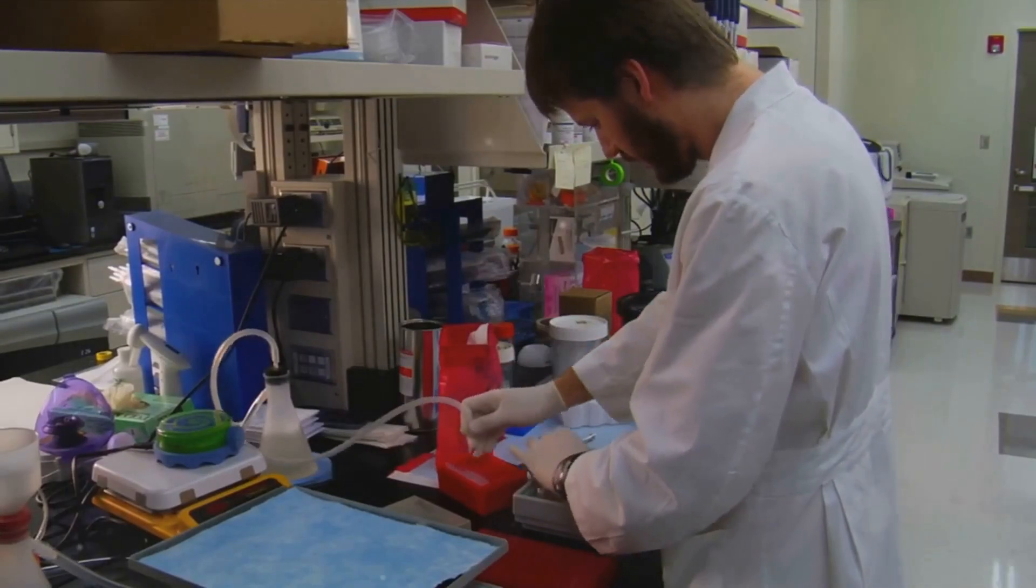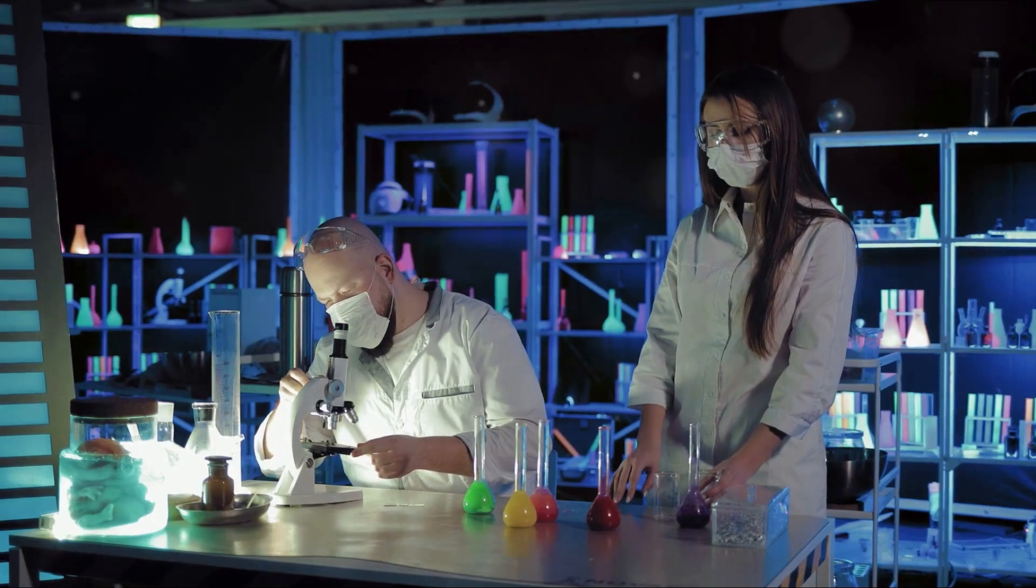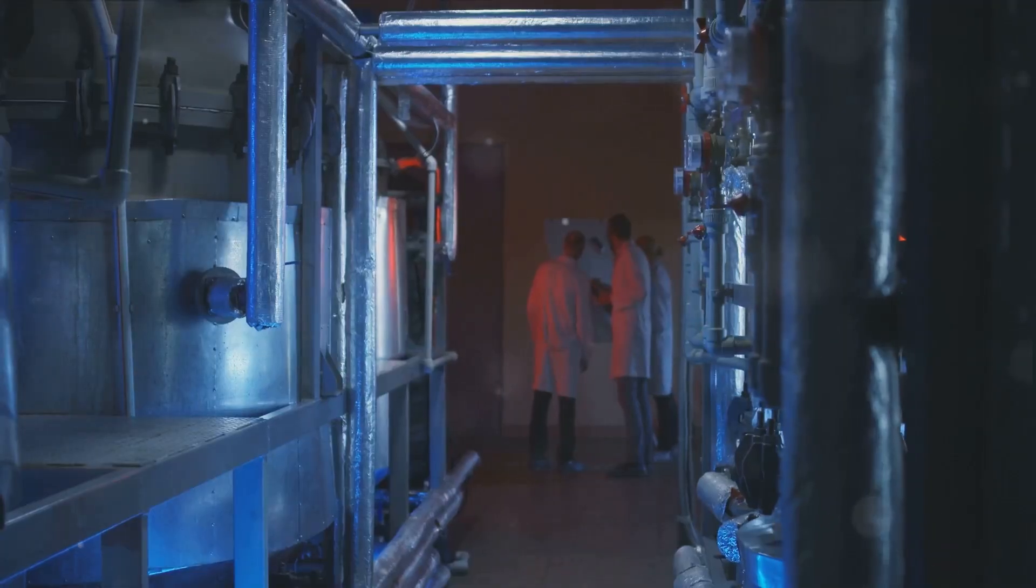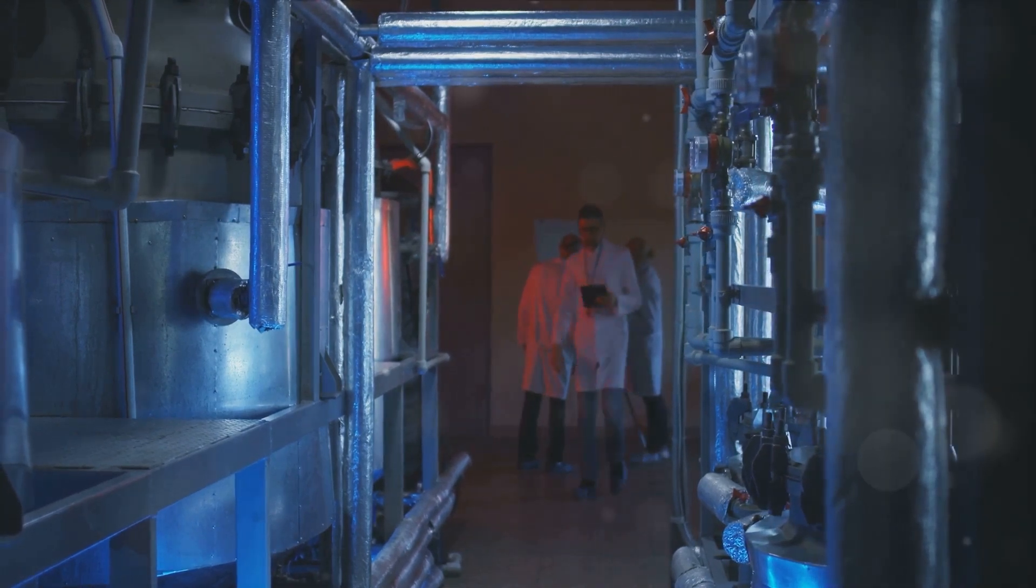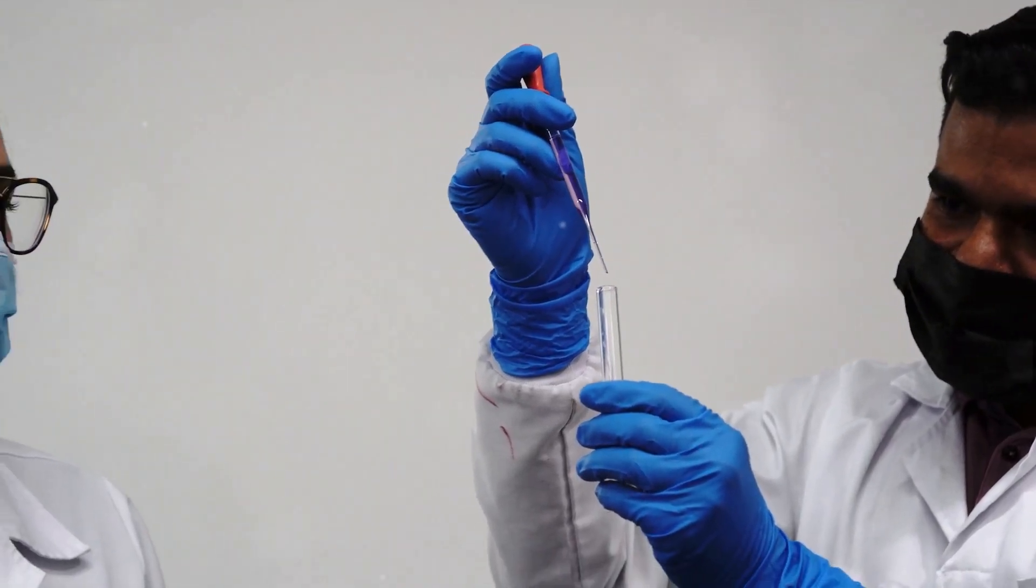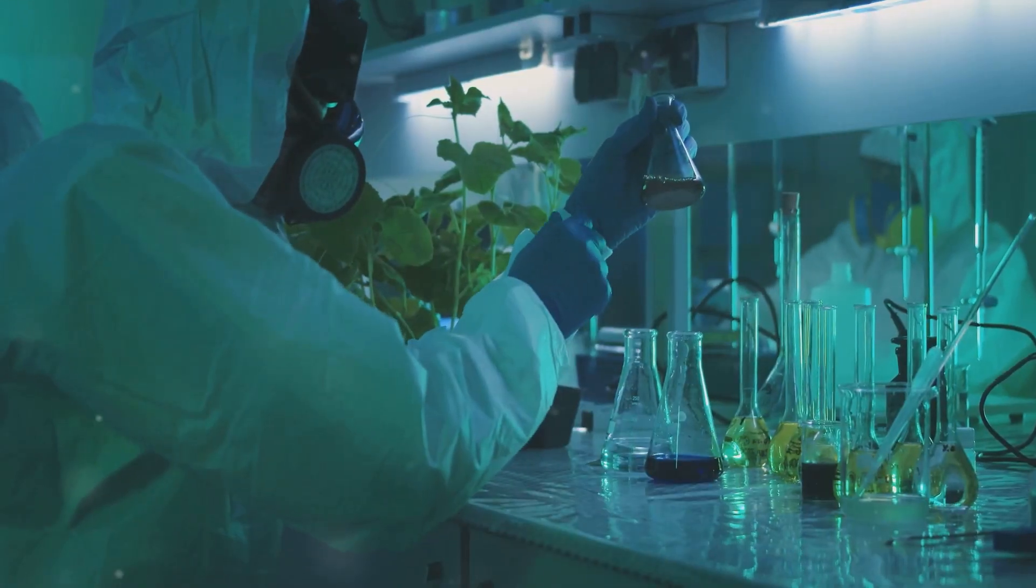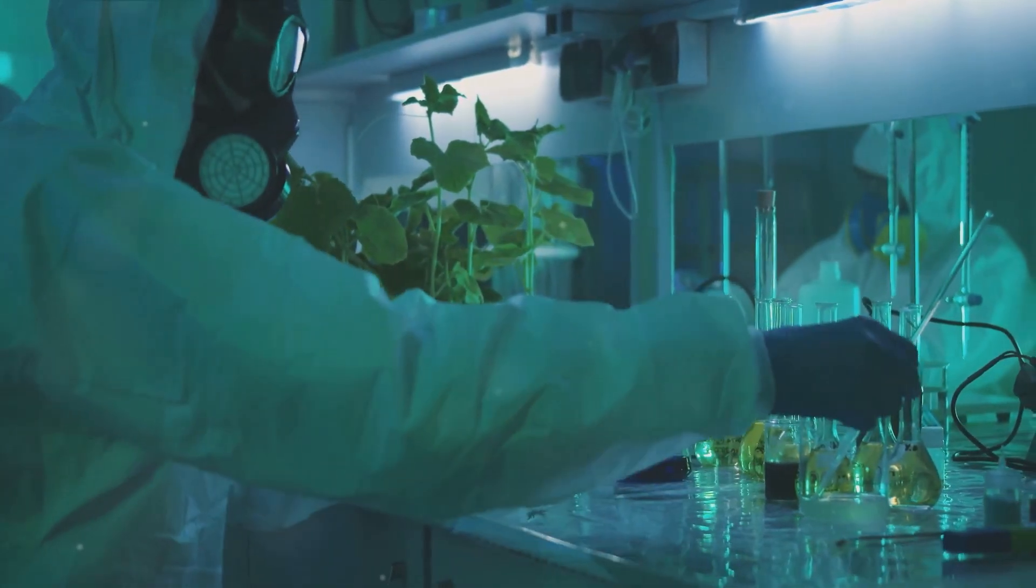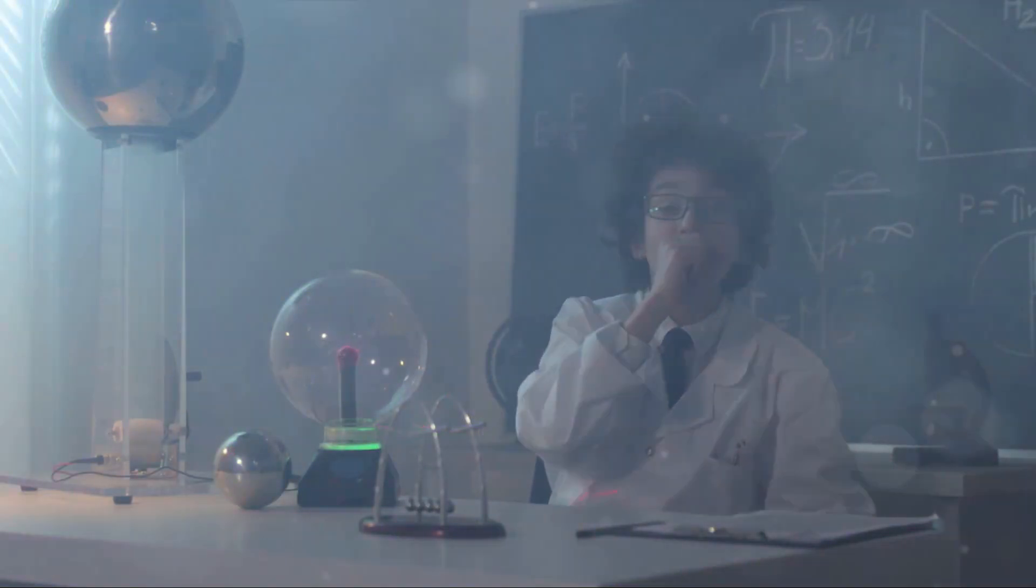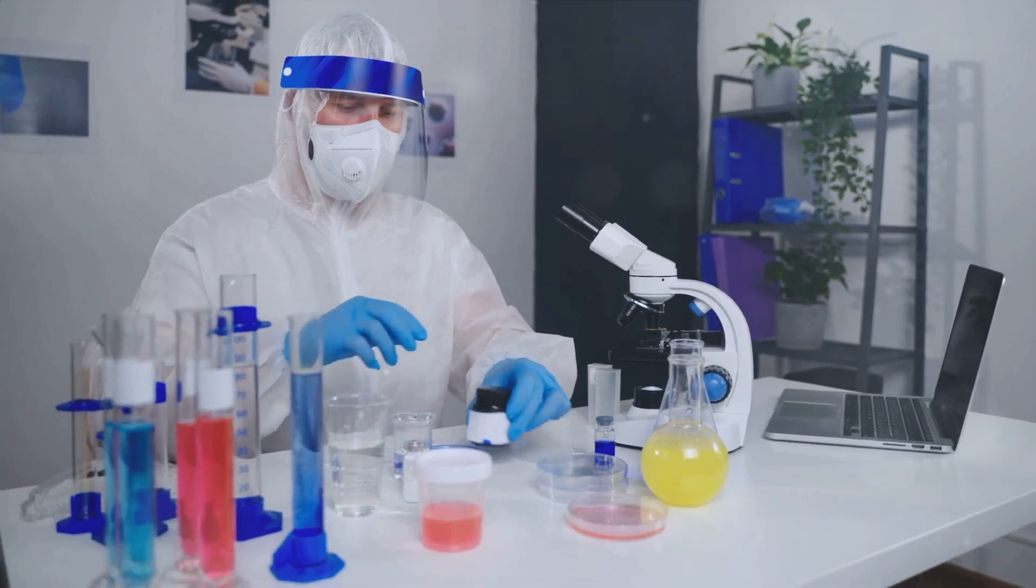Now, prepare for the mind-bending terror of the double-slit experiment. Imagine a world where particles can exist in two places at once. A realm where the laws of physics as we know them crumble to dust. Welcome to the eerie reality uncovered by the double-slit experiment. This is not a tale of horror conjured up by a novelist's imagination, but a chilling truth revealed by the cold, unflinching eye of science. Let's delve into the heart of this terrifying mystery. The experiment involves firing particles at a barrier with two slits. Logic dictates that a particle should pass through one slit or the other, right?